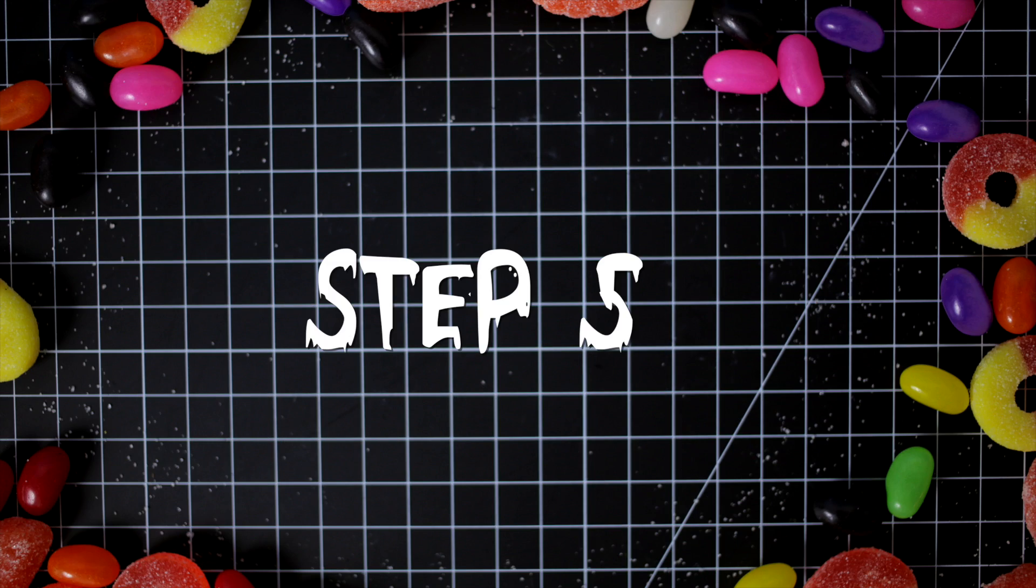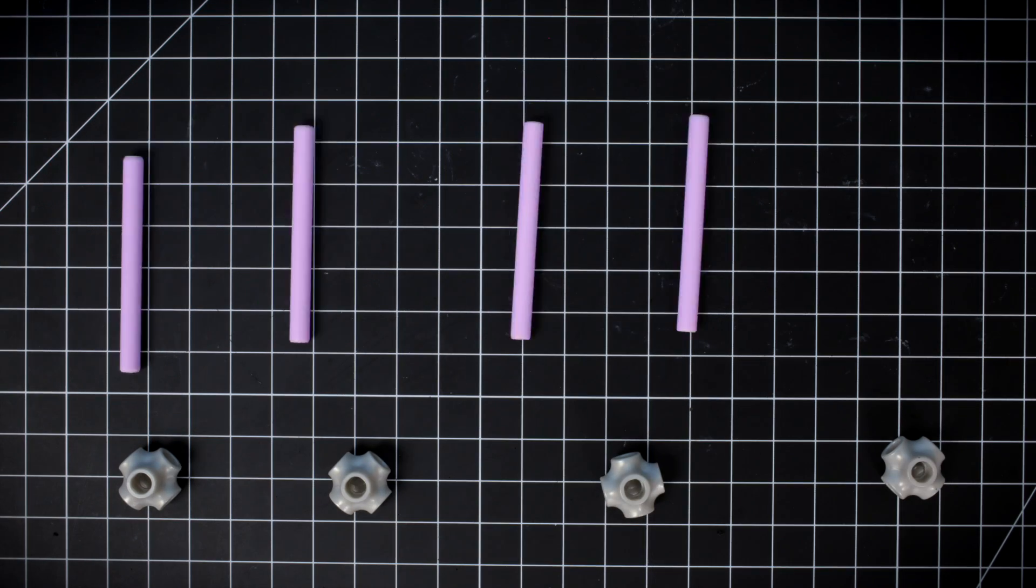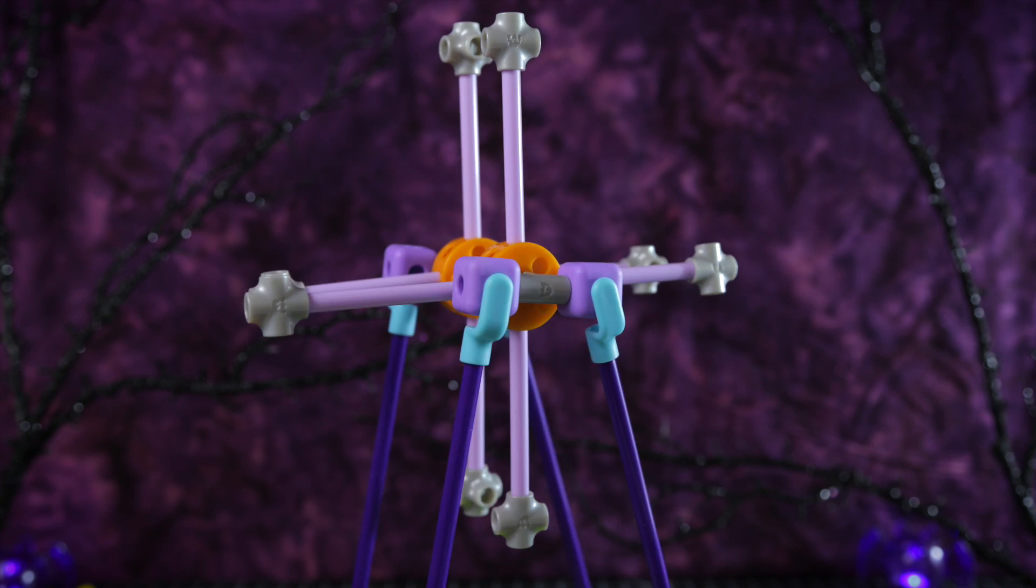Step five: Add one five-way joint to each short axle. Now insert them into both wheel hubs.